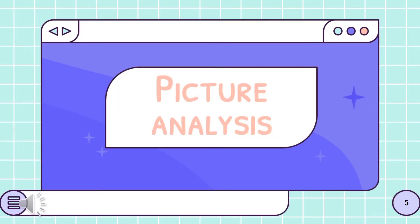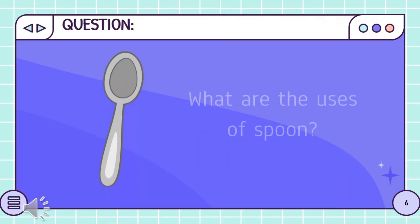Here's our first activity. We will do Picture Analysis. I'll show you a picture and then you will answer the questions that I will ask. Is that clear, Grade 1? Great! What object is this that you can see on screen? Absolutely! That is called a spoon.